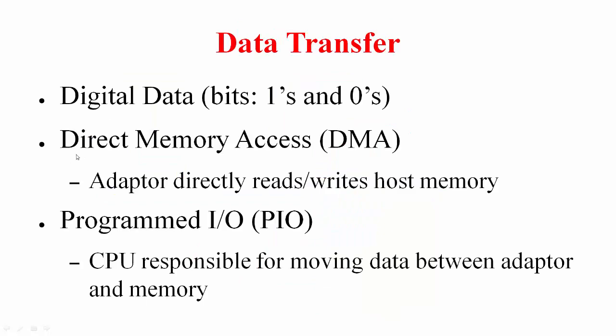There are two ways to move the data. One is called direct memory access. In this case, the adapter directly reads and writes into the host memory. Another is programmed input output. In this case, the CPU plays a role. It is responsible for moving the data between the adapter and the memory.